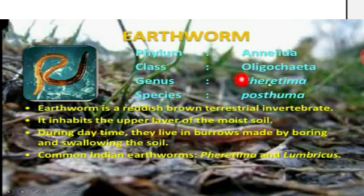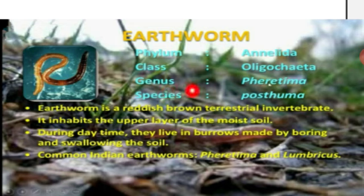Clitellum is present. Subclass: Oligochaeta. Setae — bristles on the body used for movement. Order: Haplotaxida. Family: Lumbricidae — this is the largest earthworm family. Genus and species give us the scientific name of the earthworm.